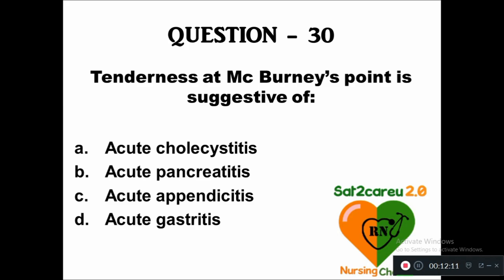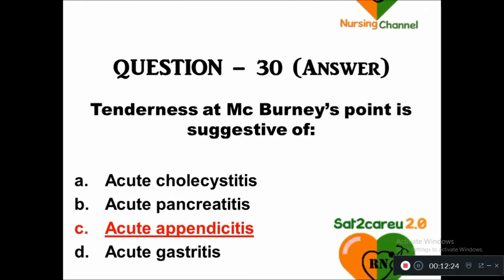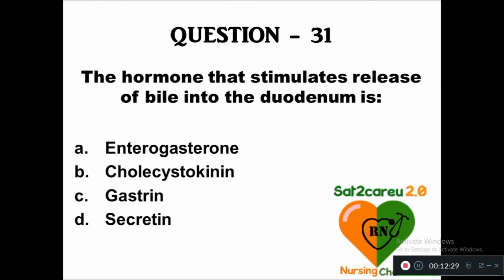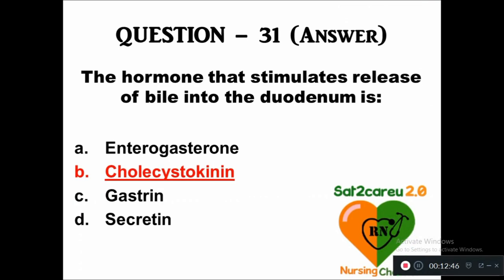Question 30: Tenderness at McBurney's point is suggestive of — option A: acute cholecystitis, B: acute pancreatitis, C: acute appendicitis, D: acute gastritis. The right answer is acute appendicitis. Question 31: The hormone that stimulates release of bile into the duodenum is — option A: enterogastrone, B: cholecystokinin, C: gastrin, D: secretin. The right answer is cholecystokinin stimulates the release of bile into the duodenum.